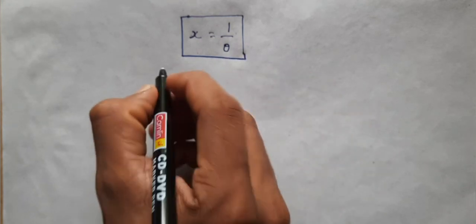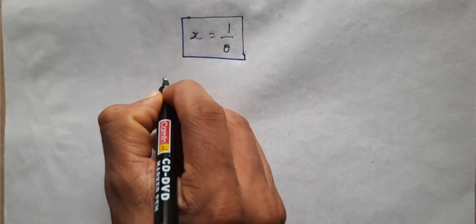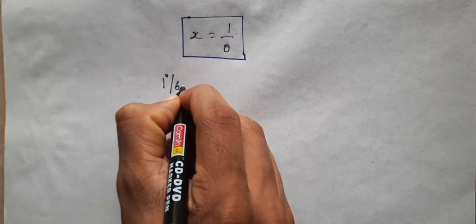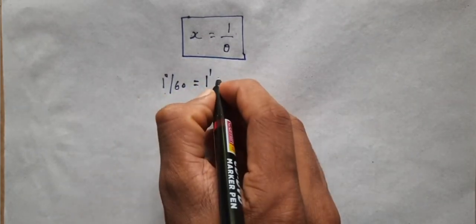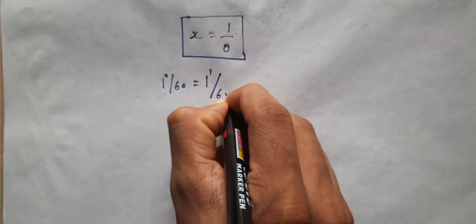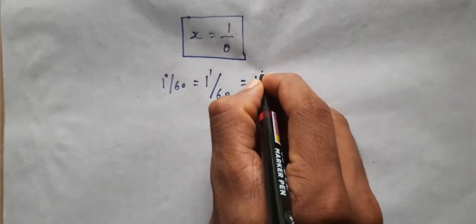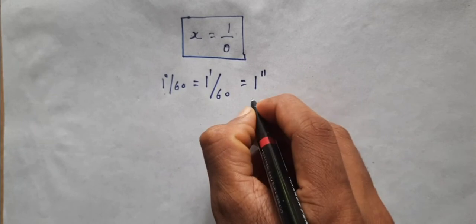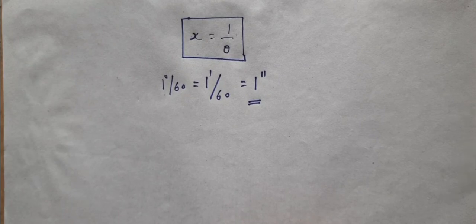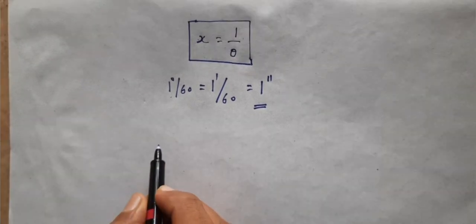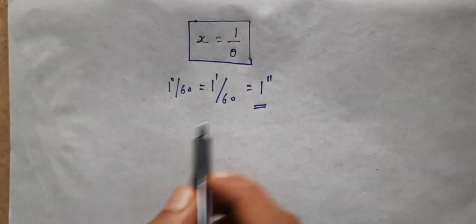What is an arc second? Let me explain. If I divide 1 degree into 60 equal parts, I get 1 minute. And if I divide 1 minute into 60 equal parts, I get 1 arc second. So, θ is in terms of arc seconds, which is a very, very, very small angle. We have instruments to measure such small angles.